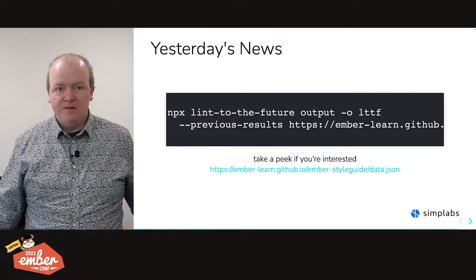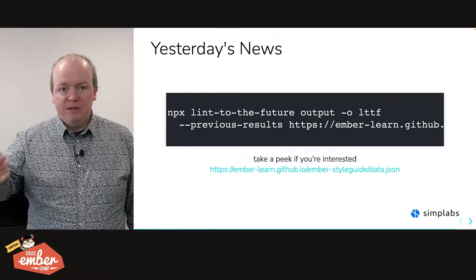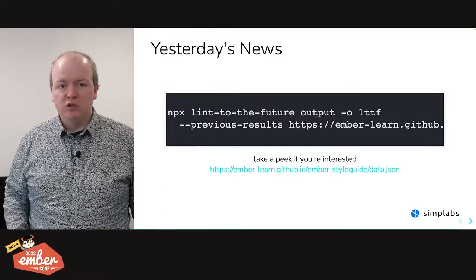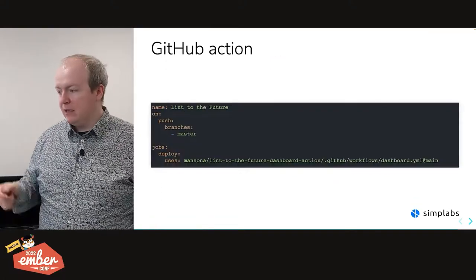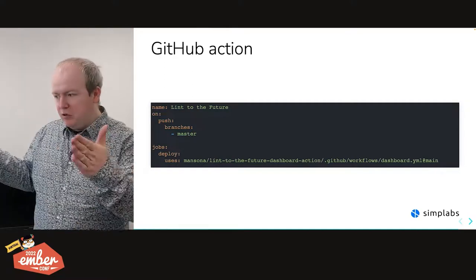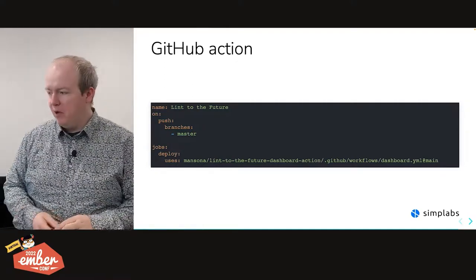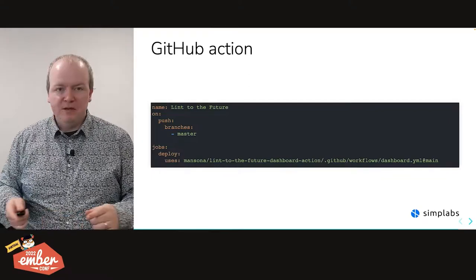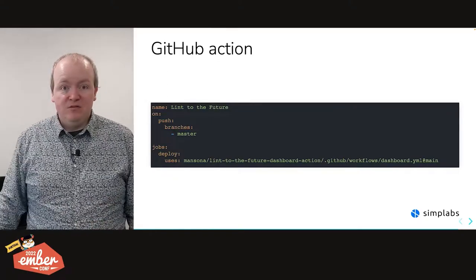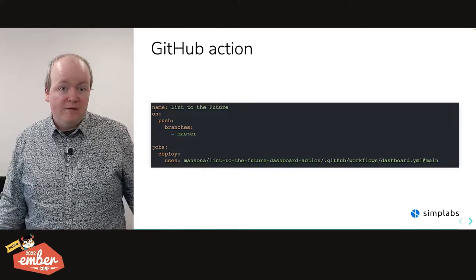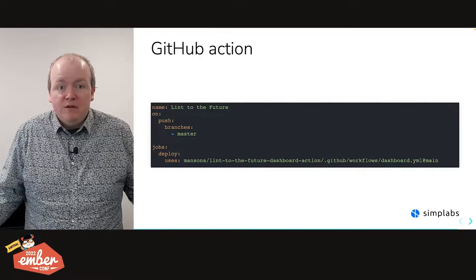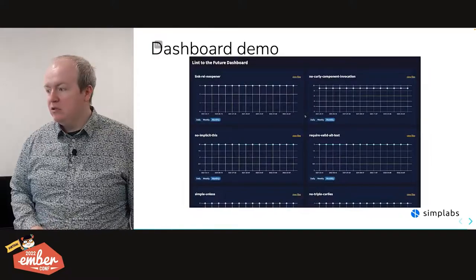On top of that, I've built a little reusable GitHub Action that does the lion's share of all this work for you. All you need to do is add this little snippet to a workflow document — and that's it, that's all you need to get started with the Lint to the Future dashboard if you wanted to try this process out. And if you've gotten this far, what does it actually give you? I've teased you with a screenshot, so let's go and do a quick demo.